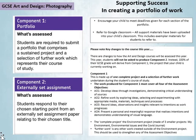There are changes to how the Art and Design courses will be assessed this year. Students will not be asked to produce Component 2. Instead, 100% of their GCSE grade will derive from Component 1. This is the project that your child is currently working on, along with any additional pieces of work that would further support any of the four assessment objectives. Because of this key change, we will be dedicating lesson time and home learning to the strengthening and further development of Component 1, up until the submission date of the 28th of April 2021.